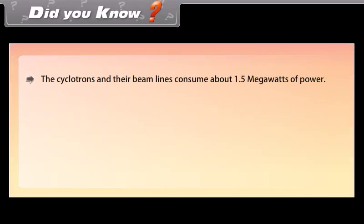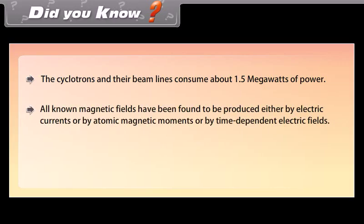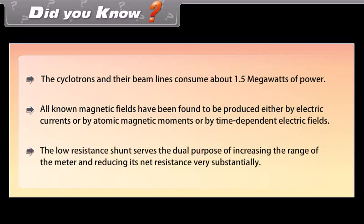Did you know? The cyclotrons and their beam lines consume about 1.5 megawatts of power. All known magnetic fields have been found to be produced either by electric currents, atomic magnetic moments, or time-dependent electric fields. The low-resistance shunt serves the dual purpose of increasing the range of the meter and reducing its net resistance very substantially.